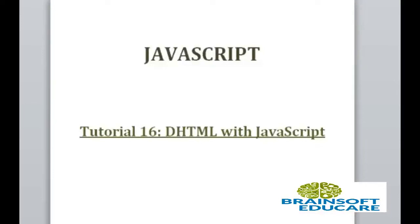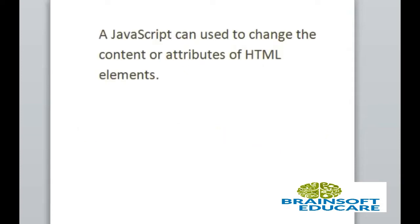Hello friends, welcome to JavaScript tutorial. In this tutorial we are going to study about DHTML with JavaScript. DHTML means dynamic HTML. It means we can change the content or attribute values of HTML elements using JavaScript — JavaScript can be used to change the content or attributes of HTML elements.